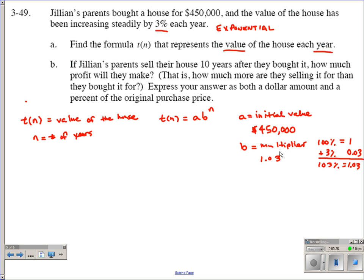So now that we know our initial value and our multiplier, we can plug them into our formula. We're going to say T(n) equals 450,000 times 1.03 for each year. How many times we're going to multiply it by 1.03 depends on the number of years. So this is our formula for part A. T(n) equals 450,000 times 1.03 to the power of n. Not times n, but to the power of n. That's how we show that we're multiplying by 1.03 repeatedly.